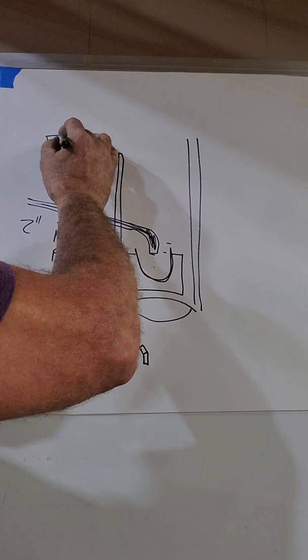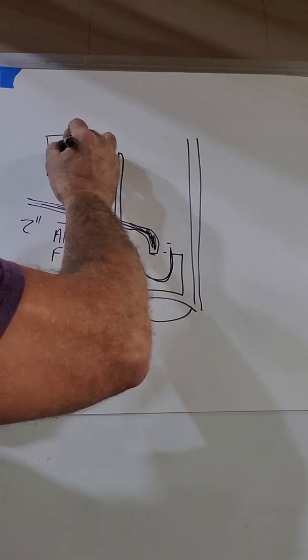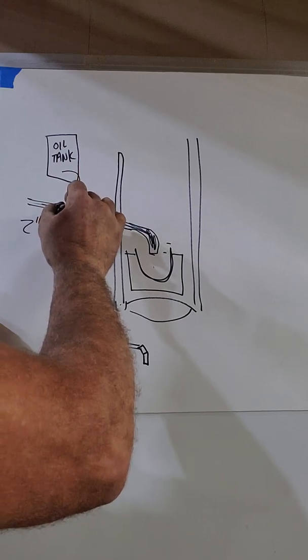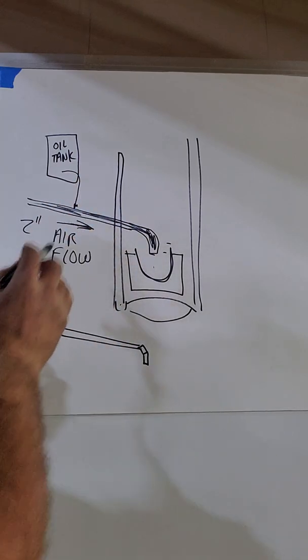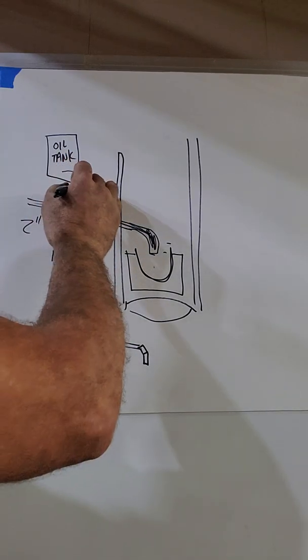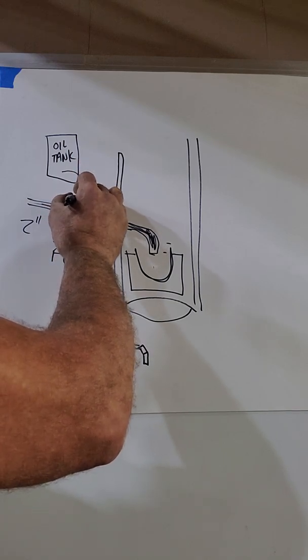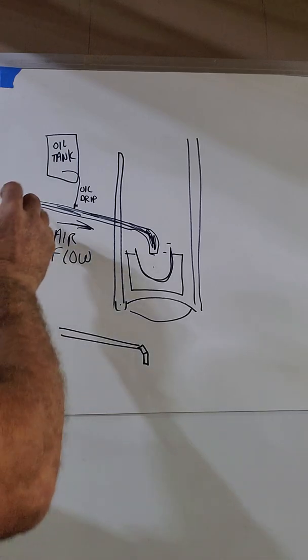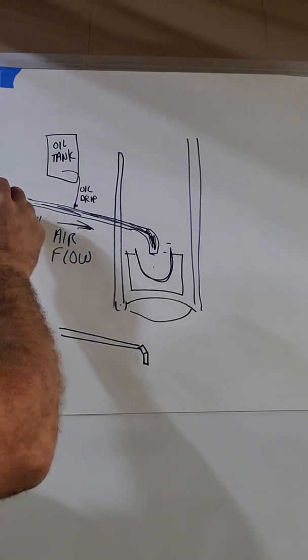And so yeah, up here you have your tank, your oil tank, and you just figure out a way to come off that and drip into this pipe right here. And so this is your oil drip. And then on this right here you hook up your fan right to there.